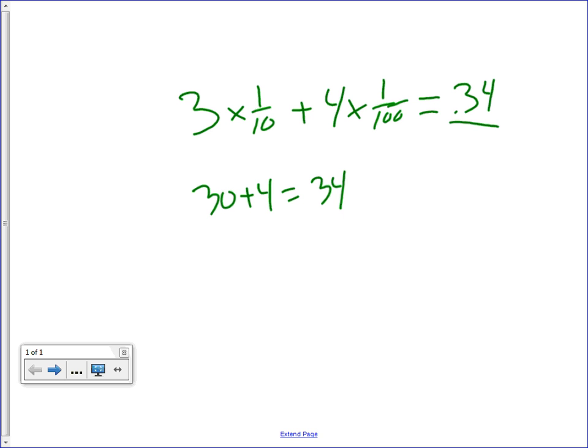One tenth, one hundredth. You could do it four times one hundredth plus six times one thousandth, would just be forty-six thousandths. So make sure you know this concept.